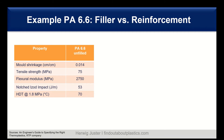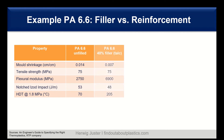Let us have a look at an example. I have selected polyamide 66. We start with an unfilled version of the PA66, and I have some properties listed: mainly mold shrinkage, tensile strength, flexural modulus, notched Izod impact, and heat distortion temperature at 1.8 MPa. We can see moderate levels here — tensile strength 75 MPa, flexural modulus is also okay, notched Izod and HDT is just 70 degrees C.